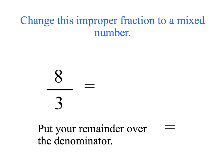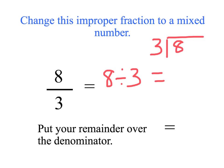Now we're changing this improper fraction to a mixed number. Eight divided by three — again you can use your calculator or do short division. Three twos are six, and then you've got two left over. So eight thirds is two and two thirds.